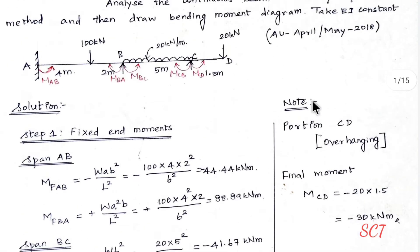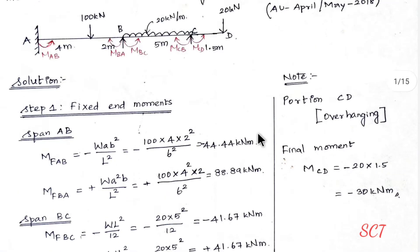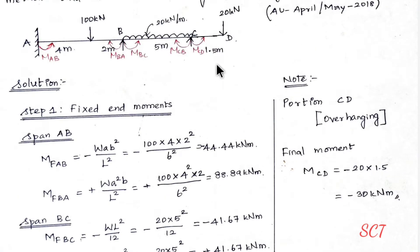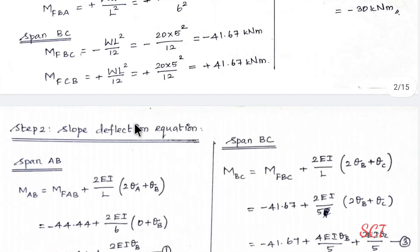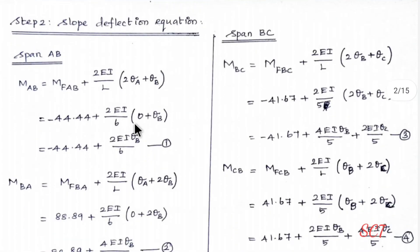For the CD portion, it is an overhang, so this gives a direct final moment. The direct final moment M_CD equals the load times the distance downward, so minus 20 into 1.5 equals minus 30 kNm.